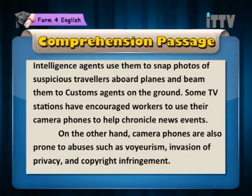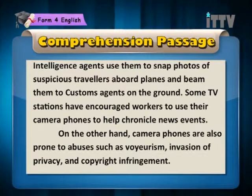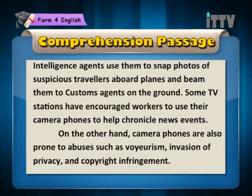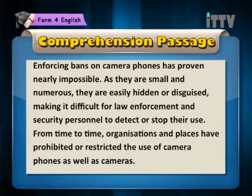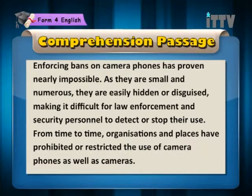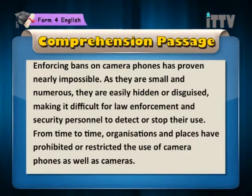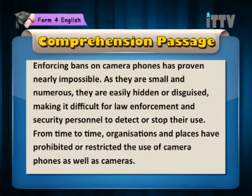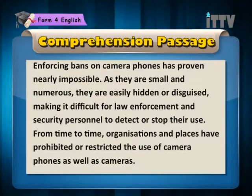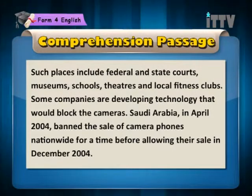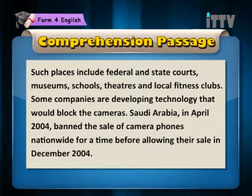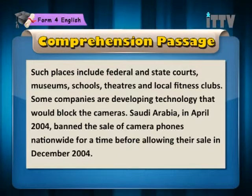On the other hand, camera phones are also prone to abuses such as voyeurism, invasion of privacy and copyright infringement. Enforcing bans on camera phones has proven nearly impossible as they are small and numerous. They are easily hidden or disguised, making it difficult for law enforcement and security personnel to detect or stop their use. From time to time, organisations and places have prohibited or restricted the use of camera phones as well as cameras. Such places include federal and state courts, museums, schools, theatres and local fitness clubs.